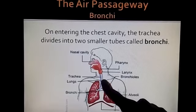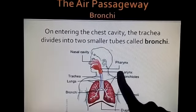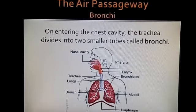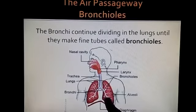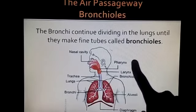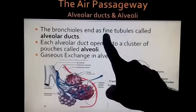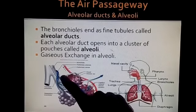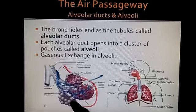From the trachea, air moves into 2 tubes, and these tubes are known as bronchi. These are the 2 smaller tubes which are formed by the trachea. These tubes then open into a cluster of pouches.